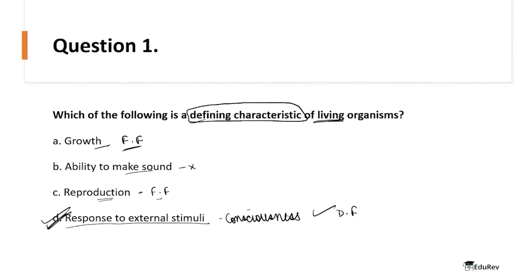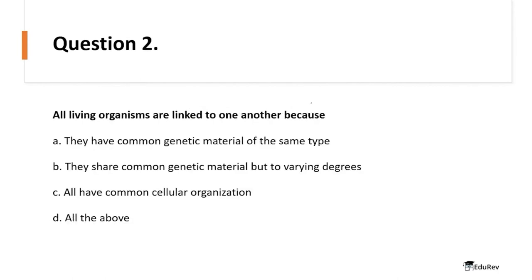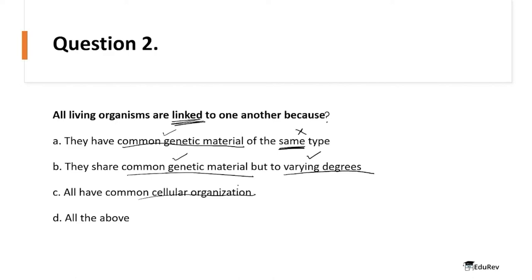Question: all living organisms are linked to one another because — option A: they have common genetic material of the same type — 'of the same type' is incorrect. Option B: they share common genetic material but to varying degrees — both parts are correct. Option C: all have common cellular organization — not true, many living organisms have different cellular organizations. Since A and C are incorrect, 'all of the above' is also wrong. The answer is option B: they share common genetic material but to varying degrees.